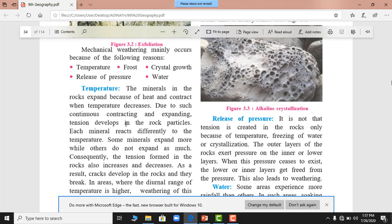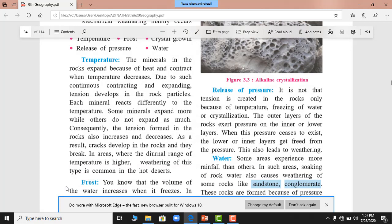Mechanical weathering mainly occurs because of the following reasons: Temperature, frost, crystal growth, release of pressure, water. Temperature means the outer surface, the particles of rocks, the outer surface of the mountains, due to the heat, the outer part of the high temperature. You can see that due to such continuous contracting and expanding, the minerals in the rocks expand because of the heat and contract. When the temperature decreases due to such continuous contracting and expanding tension developed in the rocks particle and each mineral reacts differently to the temperature. The outside temperature is high while the inner surface of the rocks in the inner surface is low. So outer surface expands when the inner surface of the rocks is low, the inner part is low. This tension is developed in the rocks and the outer parts and inner parts have cracks.